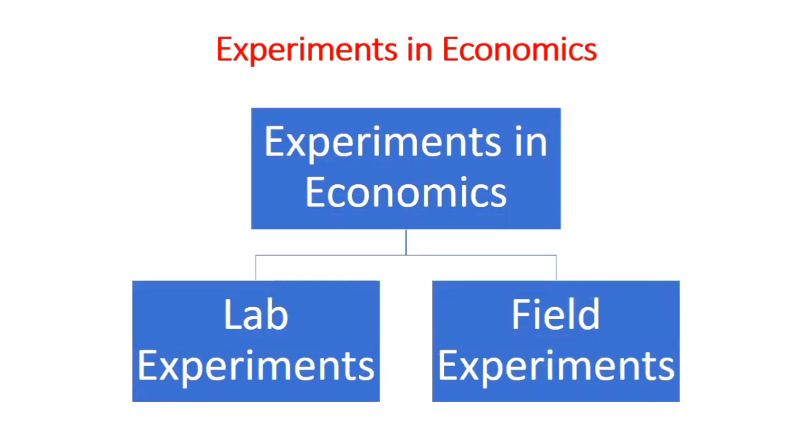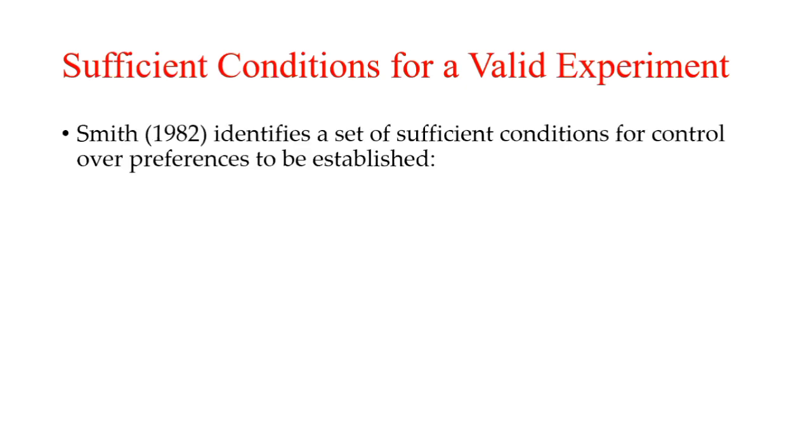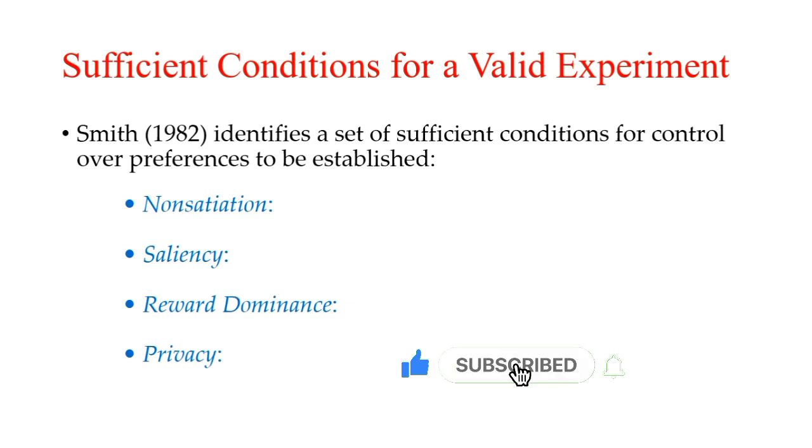Before discussing lab and field experiments, let's take a minute to discuss sufficient conditions for a valid experiment. Smith identified a set of sufficient conditions for control over preferences to be established. These are: number one, non-satiation, which means that the increase in the payoff should strictly be preferred. Next, salience, that is whatever treatment is being given should dominate the behavior. Third, reward dominance, which means that the reward must dominate all kinds of costs. Next is privacy, that is an agent should know only his or her outcome and reward.